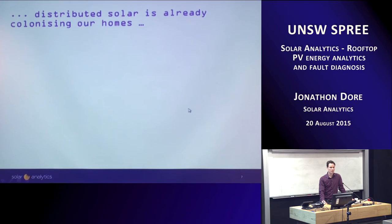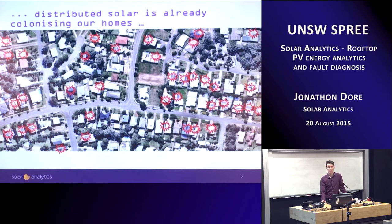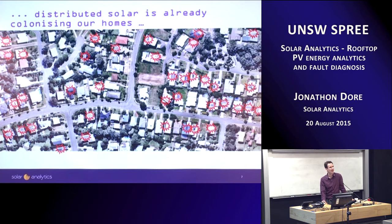And it's already happening here and now in our homes. If we look at a suburb — I think this one's in South East Queensland — you might be able to guess what those little marks are. Anyone tell me what those little red things mean? They are solar arrays on all those houses. So it is getting more and more prevalent around our suburbs, and we'll see that continue over the coming years.